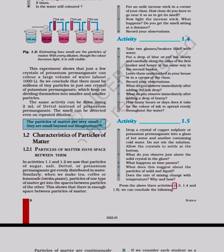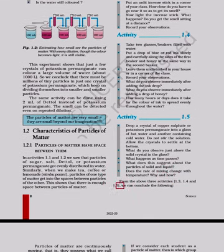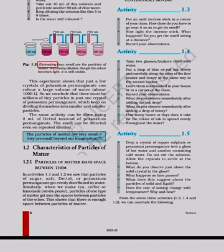From the above three activities 1.3, 1.4 and 1.5, we can conclude the following. With every dilution, though the color becomes light, it is still visible. This experiment shows that just a few crystals of potassium permanganate can color a large volume of water (about 1000 L). So we conclude that there must be millions of tiny particles in just one crystal of potassium permanganate, which keep on dividing themselves into smaller and smaller particles.